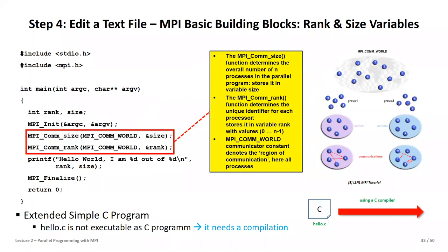Depending on the communicator, a processor has different rank information. For example, we can have ranks from zero up to nine in MPI_COMM_WORLD, but those ten processors can be divided into subgroups — two different communicators — and in each, ranks start again from zero up to four. So one processor is in MPI_COMM_WORLD but also in a subgroup communicator and has different ranks in each. This is important, especially since the communicator defines the region of communication — MPI always needs the communicator to know where you're actually communicating.